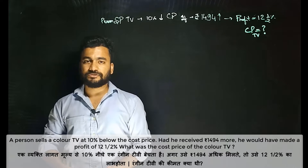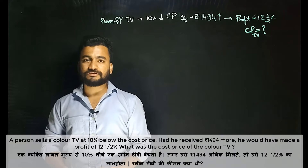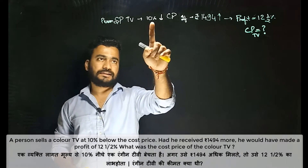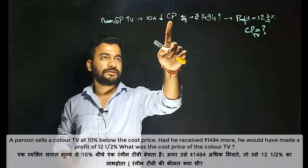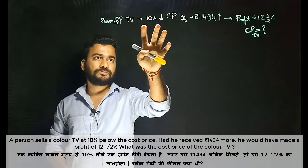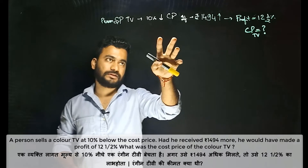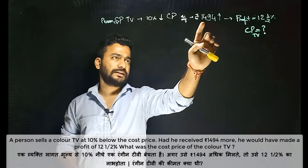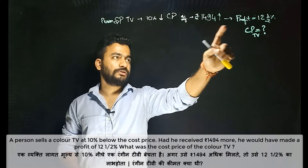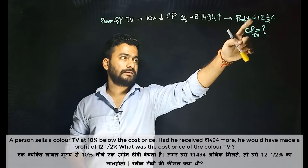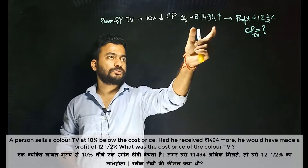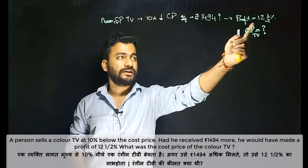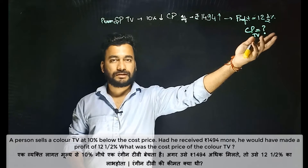Hello students, let us see the solution of today's question. A person sells a TV at 10% less than the cost price. If he sells it at 1,494 rupees more, he would get a profit of 12 and a half percent, which means the profit is 12.5%.